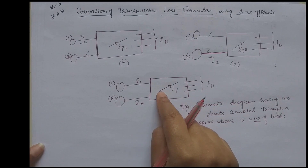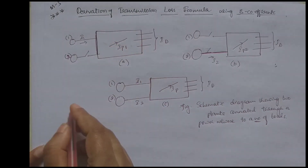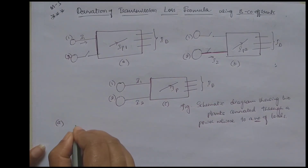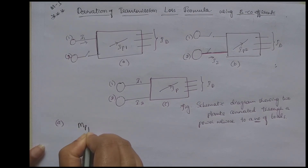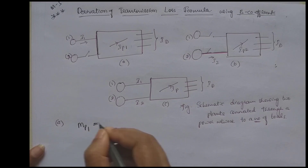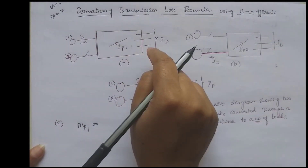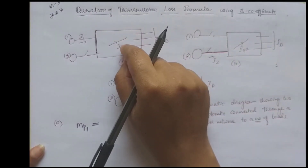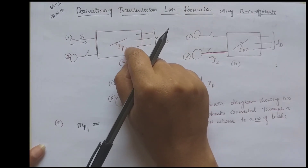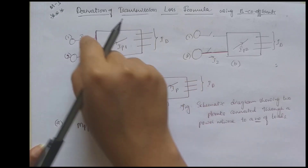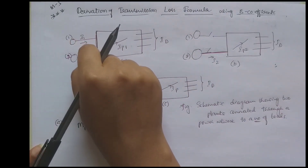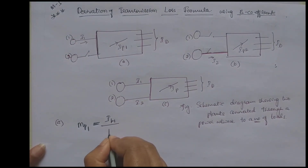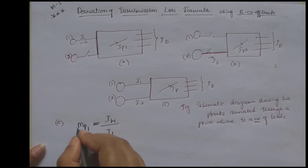From this we can calculate the current distribution factor. When plant 1 alone supplies (case A), the current distribution factor — indicated by MP1, or NP1 in some textbooks — is equal to the ratio of line current IP1 to the current supplied by the generator I1. So MP1 = IP1 / I1. Take this as equation 1.